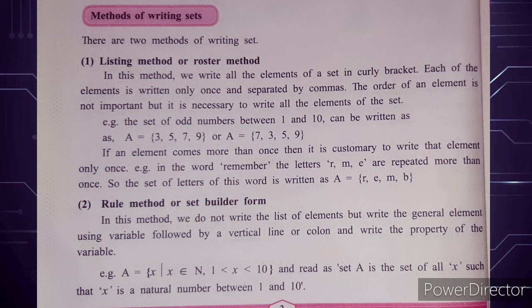For example, the set of odd numbers between 1 and 10 - we do not include 1 or 10 themselves. The answer is capital A equals {3, 5, 7, 9}. We can write them in any order - like {7, 3, 5, 9} or {9, 3, 5, 7} - there is no necessary order required.